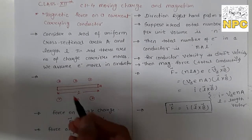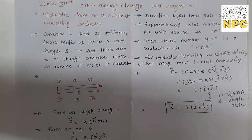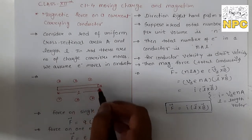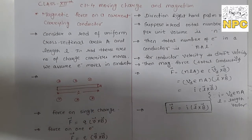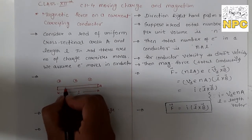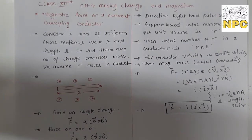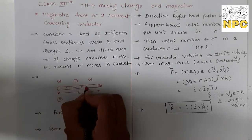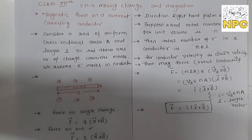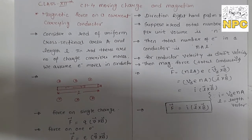We have taken a current-carrying conductor with a length of small L and cross-sectional area A. Suppose that electrons move — so electrons move and current flows. We have supposed that current I flows, which means electrons are flowing in the opposite direction.